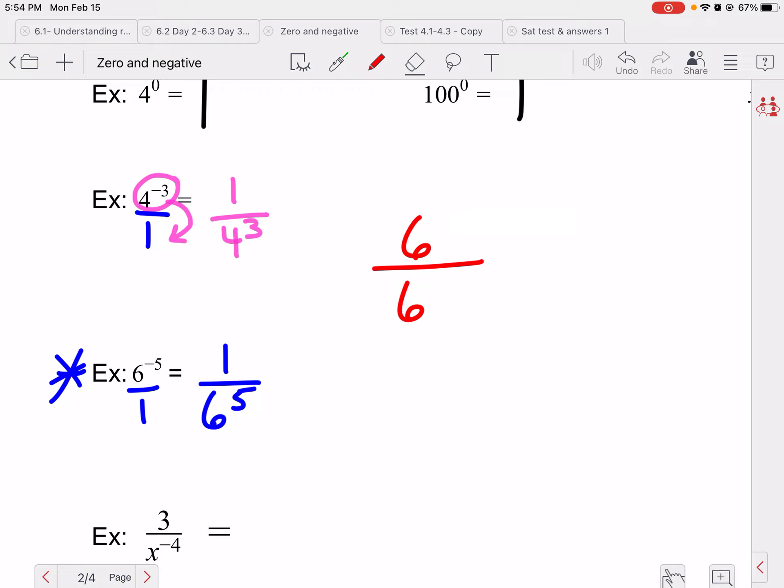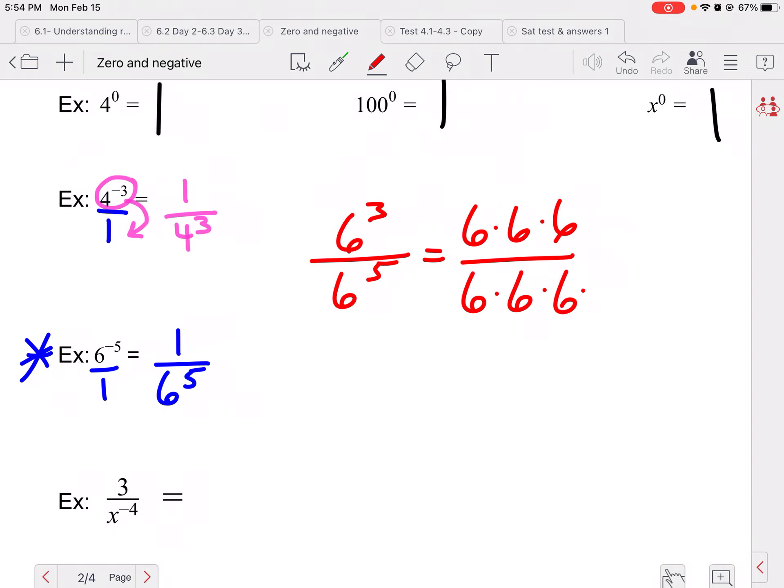The reason this one works is if we had, like, 6 to the eighth over 6 to the thirteenth, right? You know, let's make these a little bit smaller. Let's make this, just so we don't have to write so many sixes. 6 to the third and 6 to the fifth. This is one, two, three, four, five, six, right? And this is one, two, three, four, five, six. I don't know why I counted weird on that one. Sorry, guys.